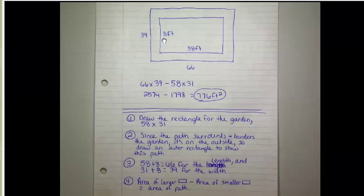Since it surrounds and borders this garden, it's on the outside of the garden. So instead of going in for my rectangle, I'm going to come out for the path and then make a larger rectangle. Since this is 4 feet wide, we have 4 feet here and 4 feet here, so I'm going to add 8 to 31. 31 plus 8 is 39.